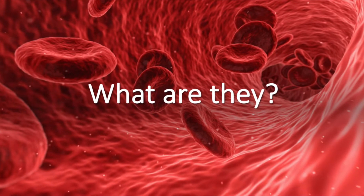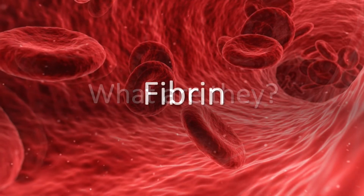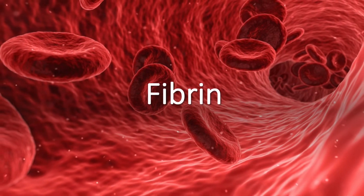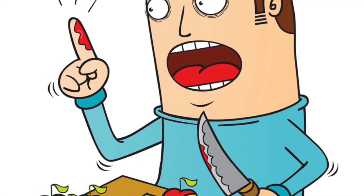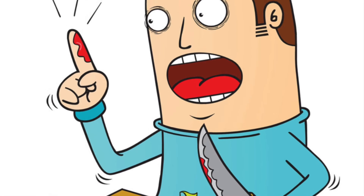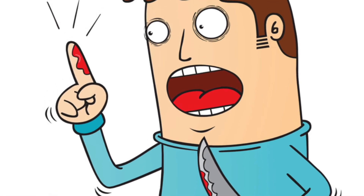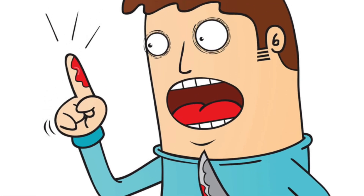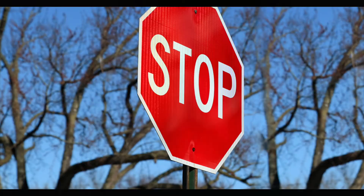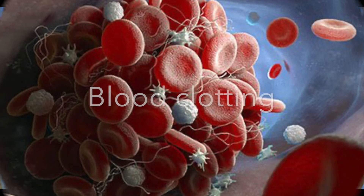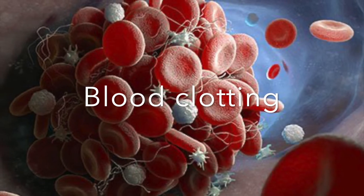So what are they? Let's start with fibrin. When you cut yourself or injure yourself, you bleed, but eventually the bleeding will stop.